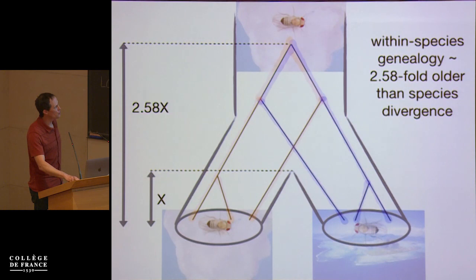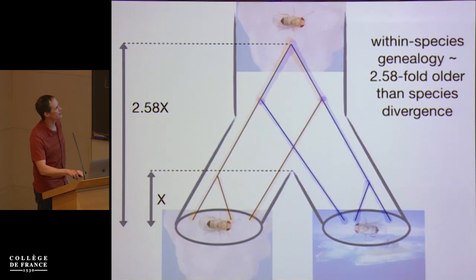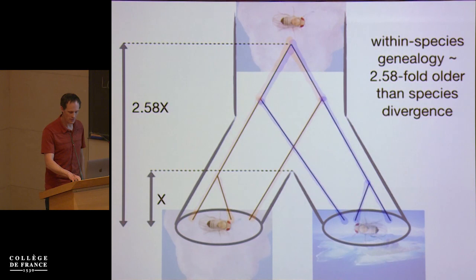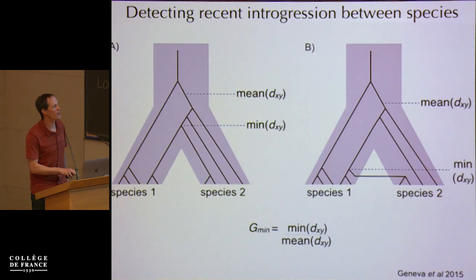So, why do we call these two species? In addition to incomplete lineage sorting, these two species — we have lots of evidence of more ancient and more recent gene flow between them. So they are exchanging genes.